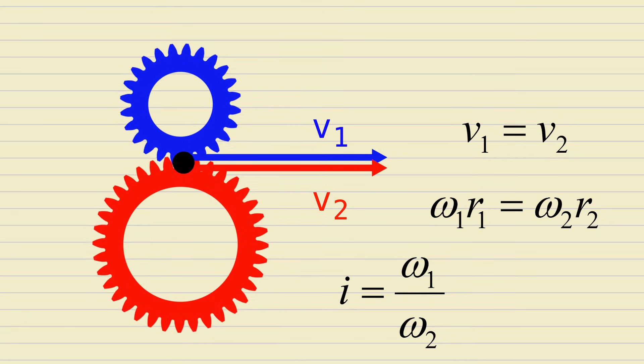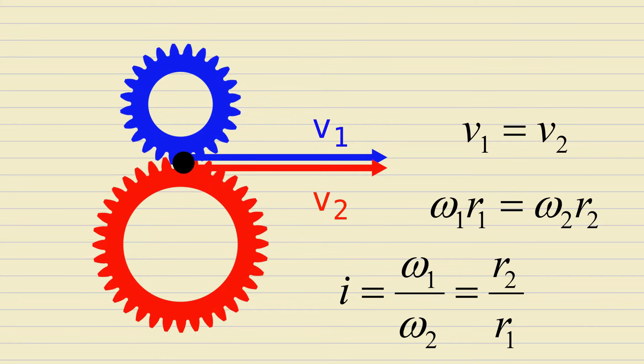Since the gear ratio is the ratio of one angular velocity to the other, it equals the ratio of the second radius to the first, or the second number of teeth to the first.